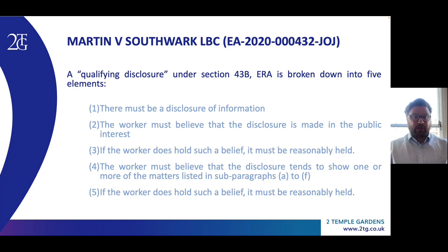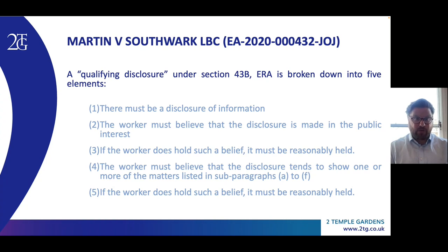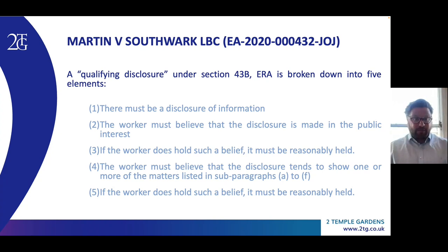In Martin, His Honour Judge James Taylor found that the first instance tribunal had failed to apply the correct five-part test set out by His Honour Judge Auerbach in Williams and Michelle Brown AM, and emphasised that although depending on the case it may not be necessary to decide each question posed by this five-part test — perhaps because the claim effectively fails at one of the first hurdles — it is however important to adopt the structured analysis arising out of this five-part test. So what is the test? In short, it breaks down the text of section 43B into five distinct elements or conditions. First, there must be a disclosure of information. Second, the worker must believe that the disclosure is made in the public interest. Third, if the worker does hold that belief, it must be reasonably held.